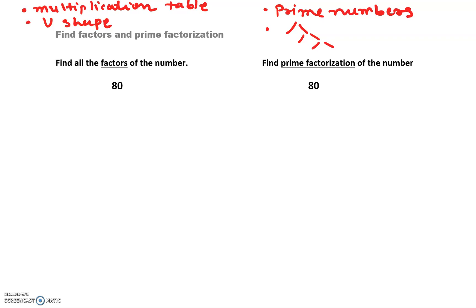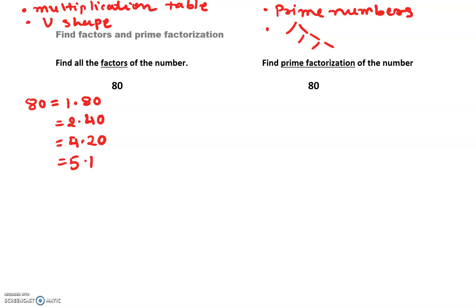Let's try factors. We're going to write 80 and ask ourselves: one times what number is 80? Two times what? Three times what? Three doesn't go evenly, so we skip those numbers that don't divide evenly into 80. Six does not go — skip it. Seven doesn't go — skip it. Nine doesn't go — skip it.